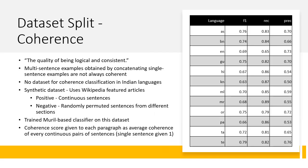Coherence is described as the quality of being logical and consistent. This is necessary since the multi-sentence examples constructed are not always coherent. Since no dataset for coherence classification exists in Indian languages, a synthetic dataset was constructed in which pairs of sentences from Wikipedia articles were used. Positive examples were continuous pairs of sentences, whereas negative examples were randomly permuted sentences. A classifier was trained on this dataset and coherence scores were ascribed to each paragraph as the average coherence of every continuous pair of sentences.